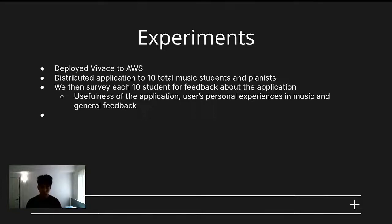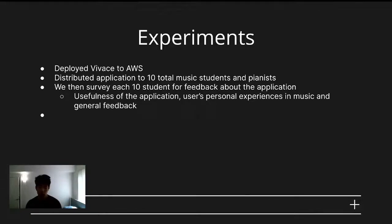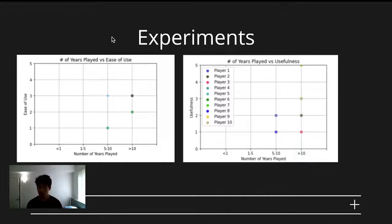The hope of this survey was to find the kind of users that this app could benefit, as well as whether this method of visualization was helpful. For example, we found that 70% of the users were advanced players, having played for more than 10 years. The remaining users played for about 5 to 10 years. As you can see here with the charts, there seemed to be a proportional relationship between the number of years played and the usefulness and ease of use of the application.